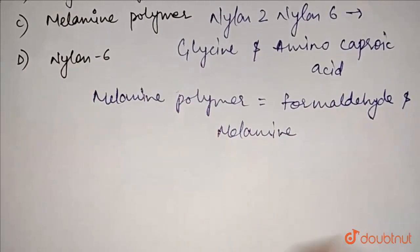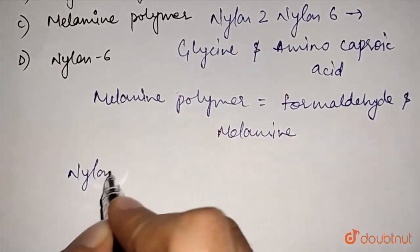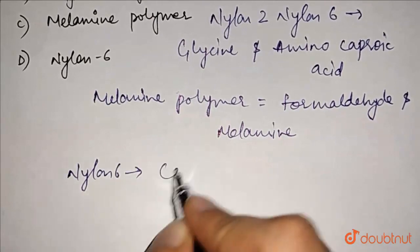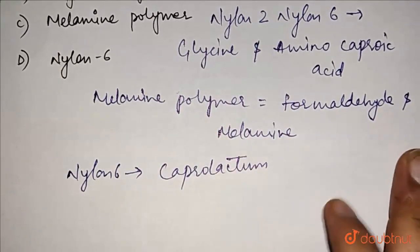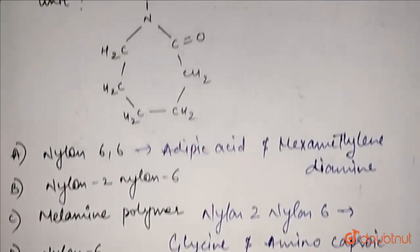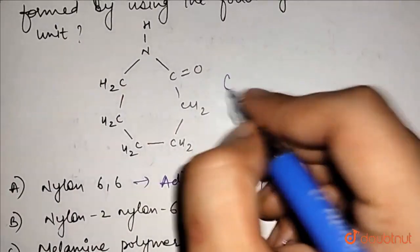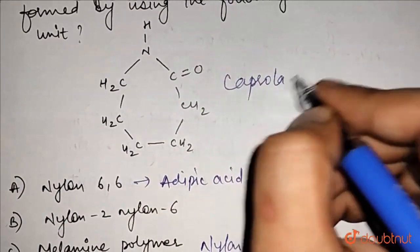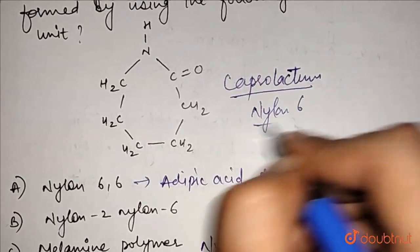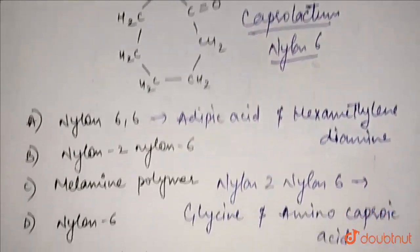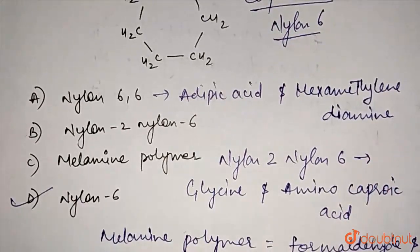So this is my nylon 6. This structure is my caprolactam structure and the caprolactam is used in nylon 6, so if we can see it in the options, option D is correct.